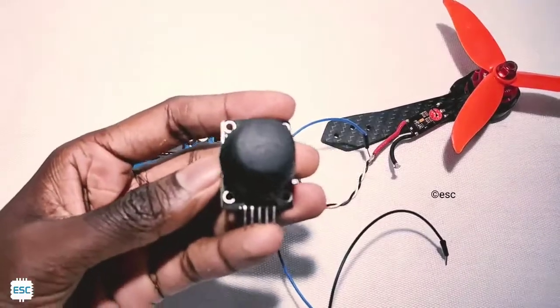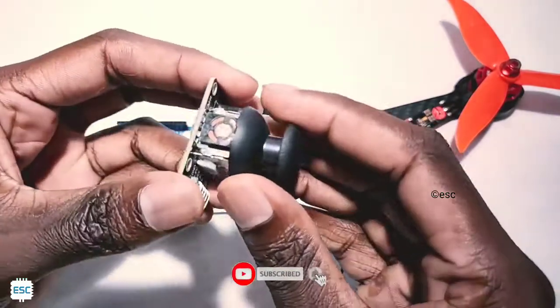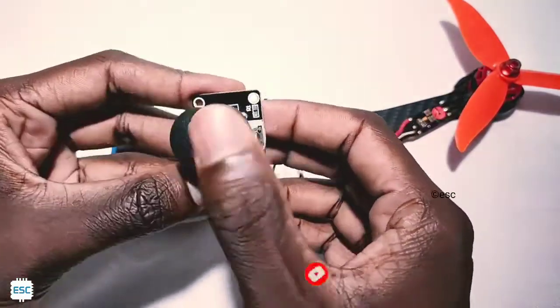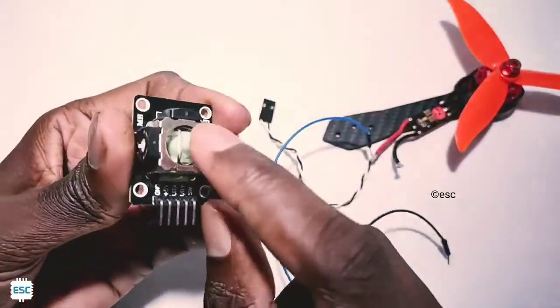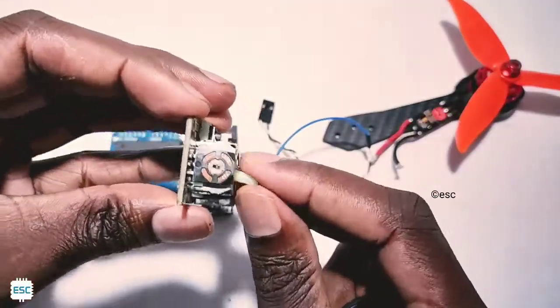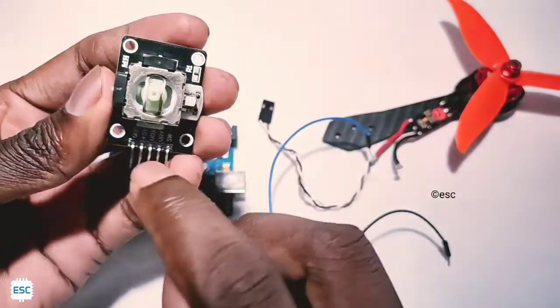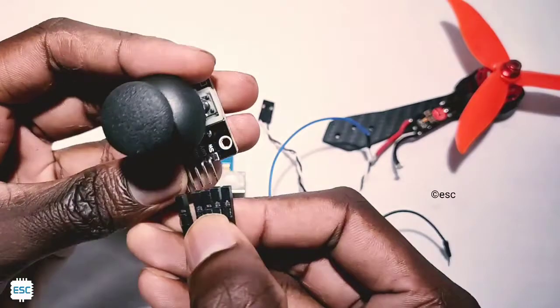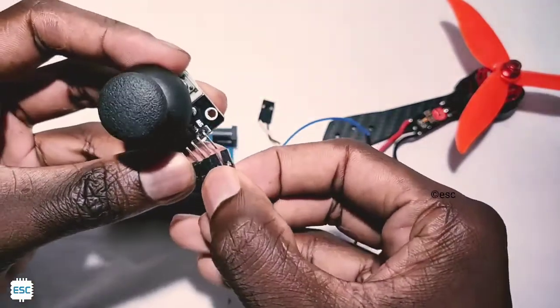To control the speed of the BLDC motor, I am using a joystick. A joystick is nothing but just a variable resistor connected with a handy knob. This is a two-channel joystick, that means we can move in two directions. In other words, we can adjust two analog values with the two directions.